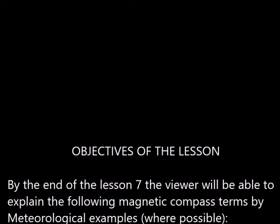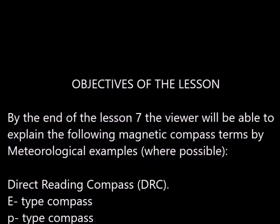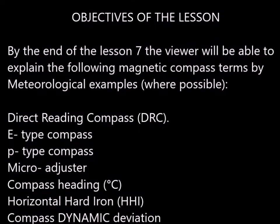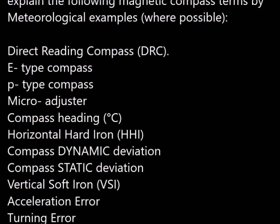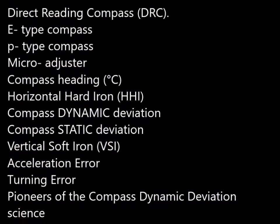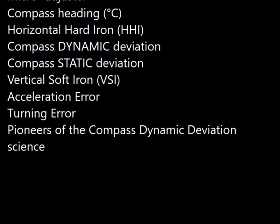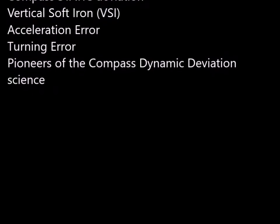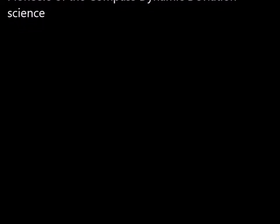Objectives of lesson 7: by the end of the lesson the viewer would be able to explain the following magnetic compass terms by meteorological examples where possible — Direct Reading Compass DRC, E-Type Compass, P-Type Compass, MicroAdjuster, Compass Heading Degrees, Compass Horizontal Hard Iron HHI, Compass Dynamic Deviation, Compass Static Deviation, Vertical Soft Iron VSI, Acceleration Error, Turning Error, and Pioneers of the Compass Dynamic Deviation Science.